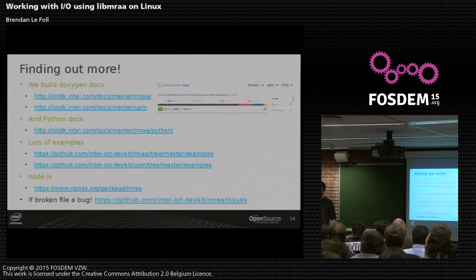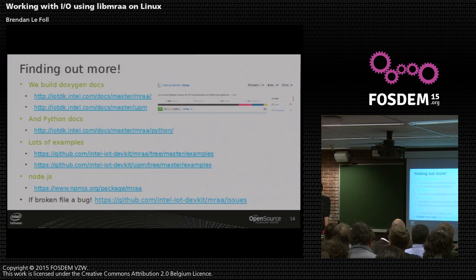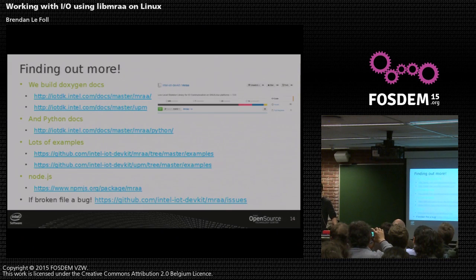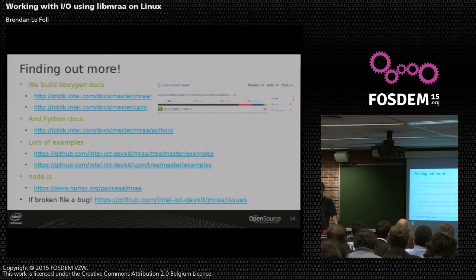Do you provide packages for different distros? For Debian, we're trying to. We've got a start on that. At the moment we support Yocto packages — every single git commit is also built into an IPK package you can install, which is essentially a dev package. We're going to modify those so you can install them on Debian as well. UPM is getting quite big, mraa is pretty small. We're going to try and push mraa into a bunch of different distros as well.